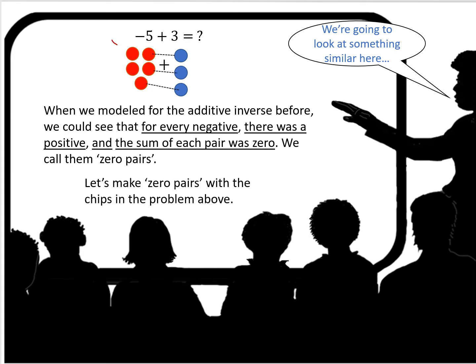So the red chips are going to represent negative and the blue chips are going to represent positive. So I have negative 5, you see 5 red chips, plus 3, 3 blue chips. It's positive 3.